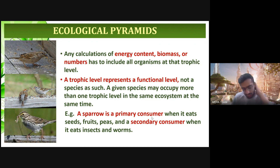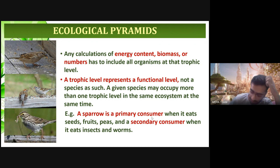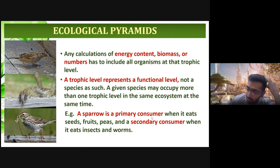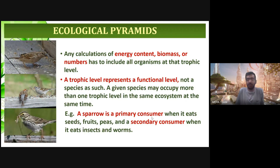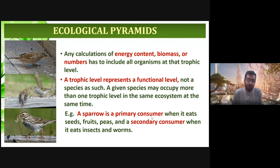A trophic level does not indicate a specific species — for example, the primary consumer trophic level can consist of any number of species, not just one specific species.